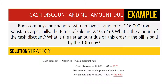Rugs.com buys merchandise with an invoice amount of $16,000 from Cardis and Carpet Mills. The terms of the sale are 2/10 net 30. What is the amount of the cash discount, and what is the net amount due if the bill is paid by the 10th day? Cash discount equals $16,000 times 0.02, which equals $320. Net amount due equals $16,000 minus $320, giving us an invoice total of $15,680.